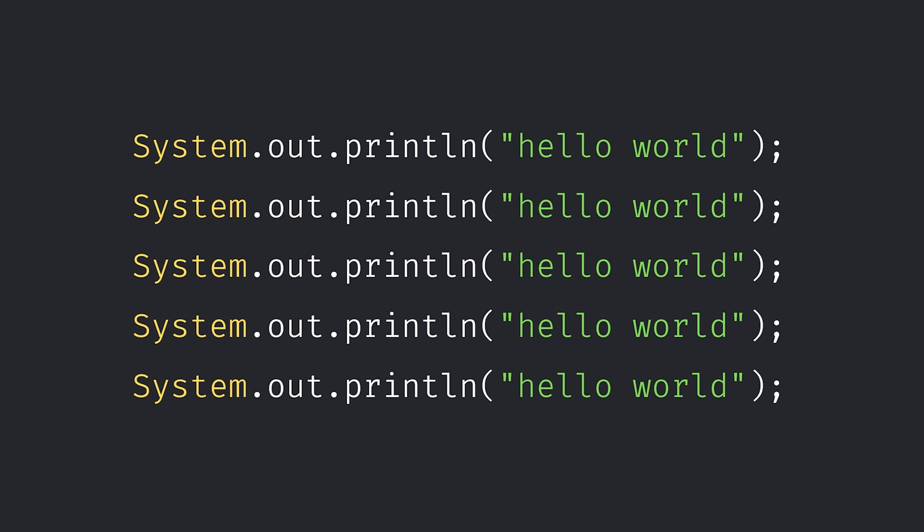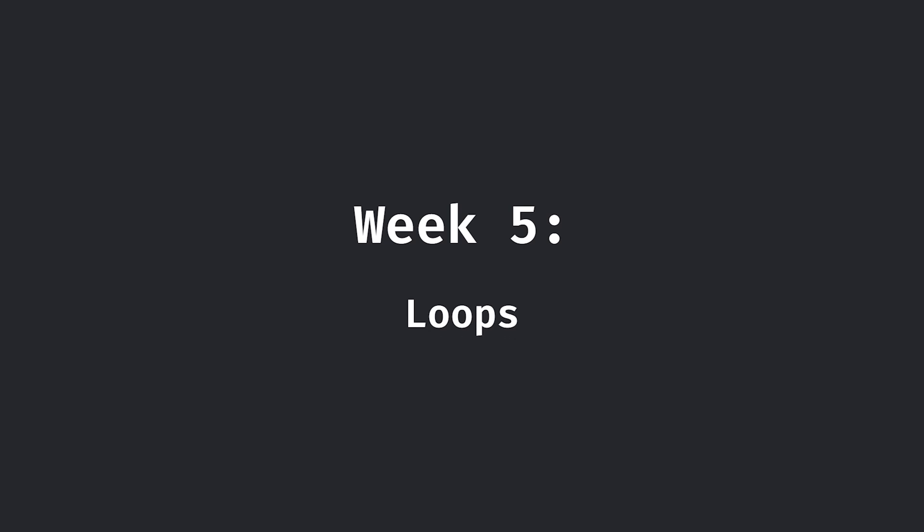So with what we've learnt so far, if we wanted to repeat a task multiple times, we would just have to write it out manually as many times as we wanted to do it. As you can imagine, if we wanted to do something a hundred times, this would get very laborious and very messy in our code. So week five introduces us to loops, starting out with a for loop and a while loop. We can use these loops to repeat an action depending on a certain condition or the number of times you want to do it.